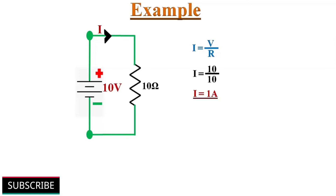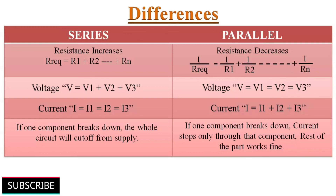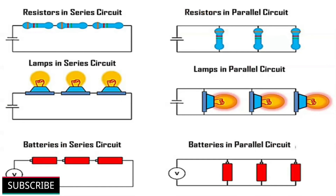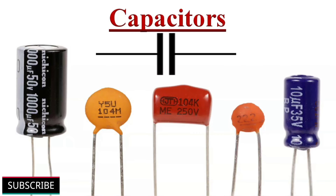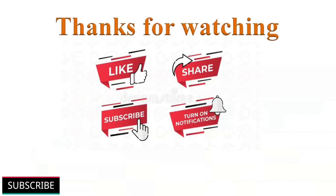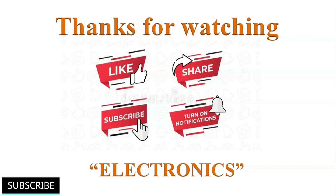We will solve more such examples in upcoming videos. I have summarized the differences between series and parallel combination of resistor network circuits, which can also be applied to any series and parallel combination circuits made up of lamps, batteries, and so on. That's all about series and parallel combination of resistor circuits. I hope you now understand how to find the equivalent resistance when resistors are connected in series or parallel. If you learned from this video, please mention it in the comments below. In my next video, we will discuss capacitors and how they work. Thanks for watching — please click like, share to help others learn, subscribe to my channel, and turn on notifications for more such videos. Have a nice day, thank you.